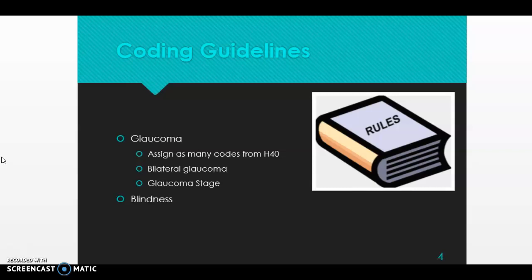These guidelines are found in the official ICD-10-CM coding guidelines under Part C, Chapter 7. There are five guidelines for glaucoma and one for blindness. The first coding guideline for glaucoma tells us to assign as many codes from category H40 as needed to identify the type of glaucoma, the affected eye, and the glaucoma stage.